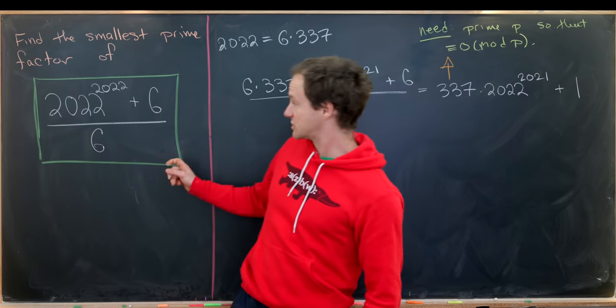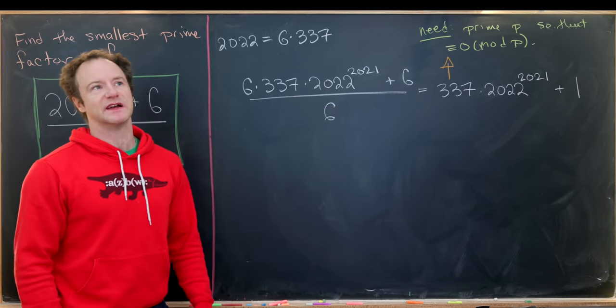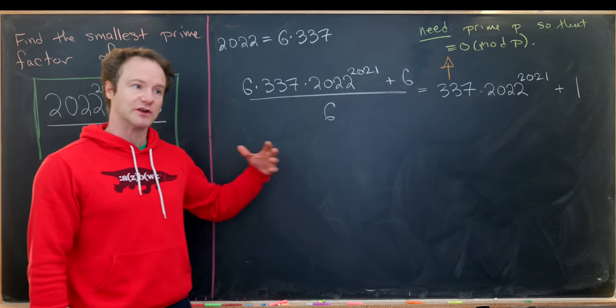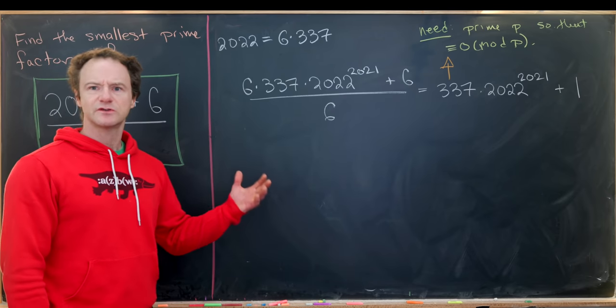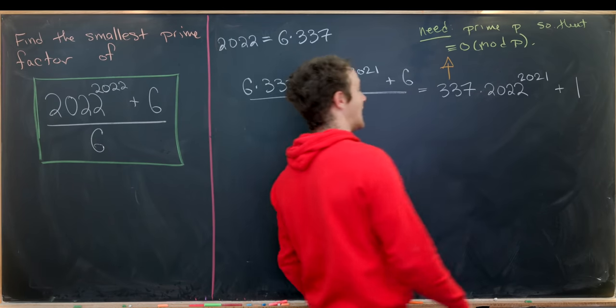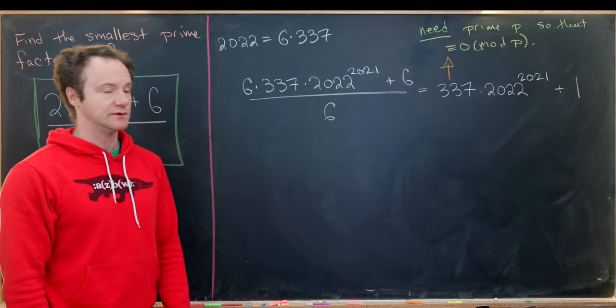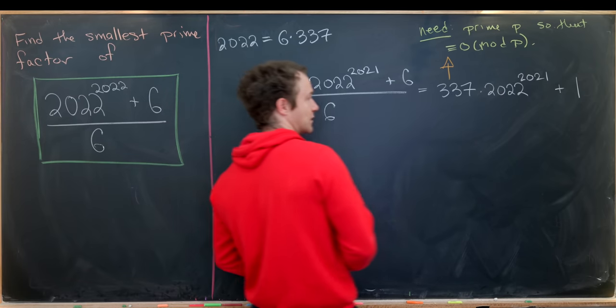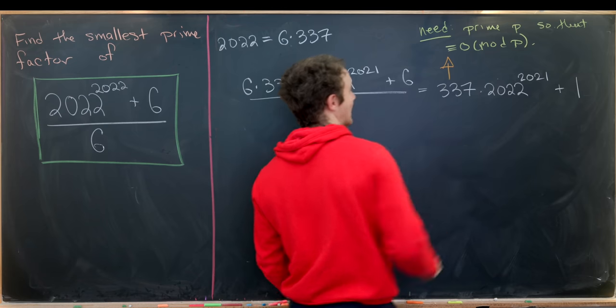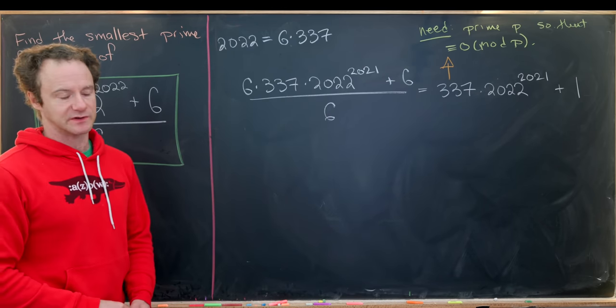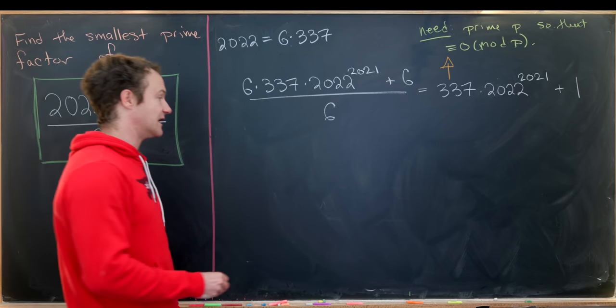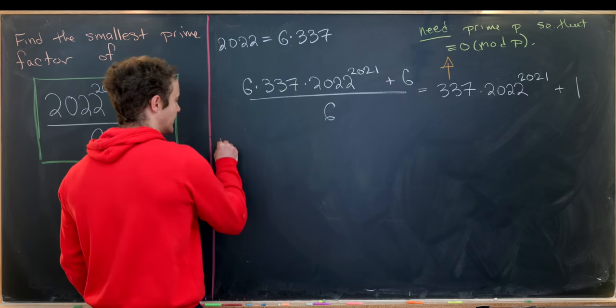Okay, so the fact that this question is being asked in the first place means it's probably not too hard to find this prime. We don't have to go too far into the prime numbers. And so notice that two won't work because this number is even, so when you add one to it, you get an odd number. Three won't work because 2022 is a multiple of three, and so when you add one to it, it's no longer a multiple of three. So the next smallest prime number is five. So let's try five.